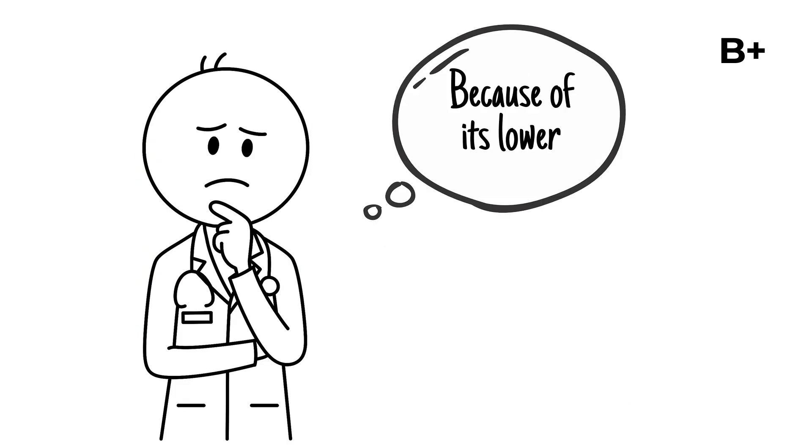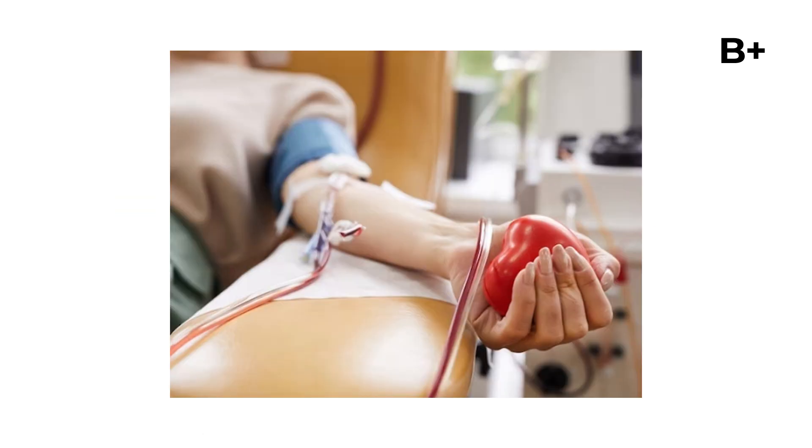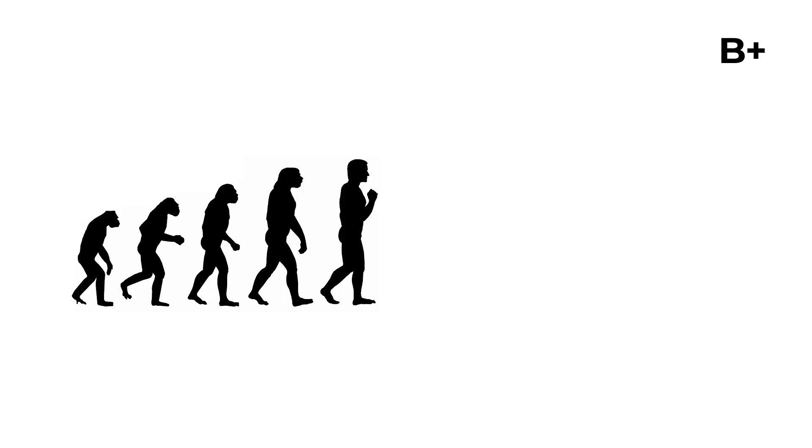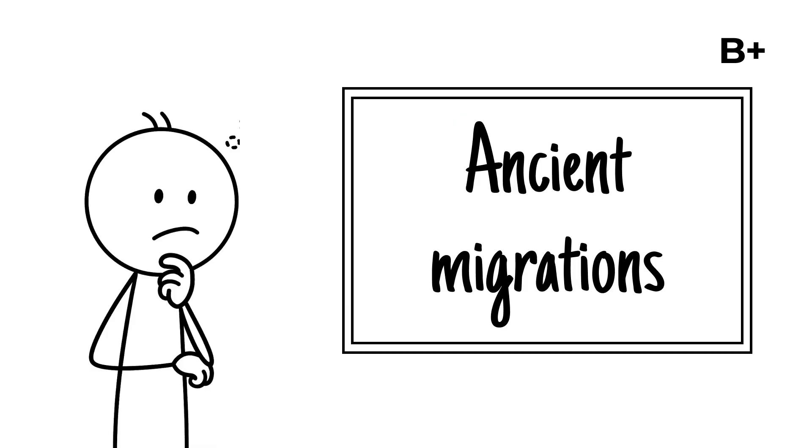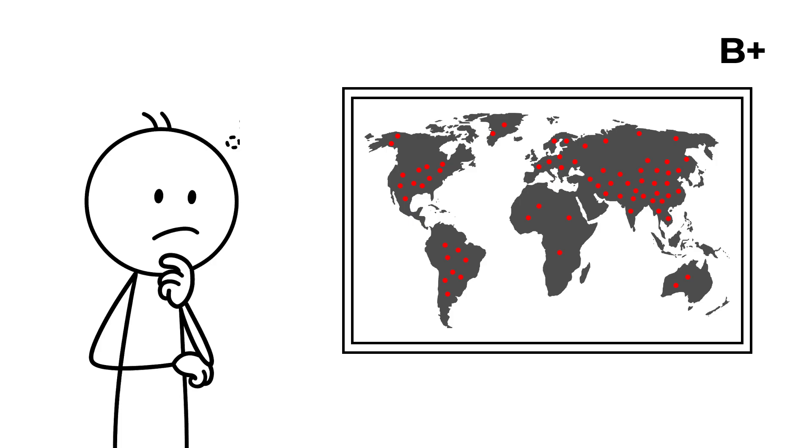However, due to its lower frequency, maintaining adequate supplies of B positive blood requires more targeted donation drives compared to O and A types. From an evolutionary perspective, type B blood shows a fascinating distribution pattern. It is especially concentrated in parts of Asia and the Middle East, suggesting that ancient migrations and selective pressures caused it to spread unevenly across the globe.